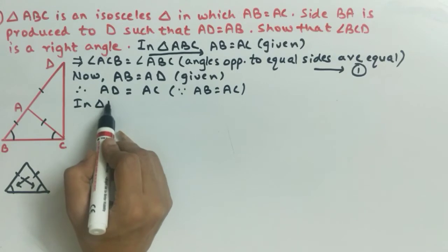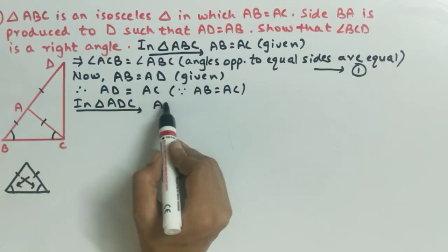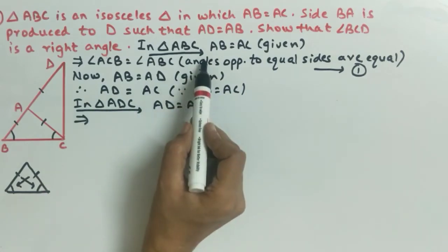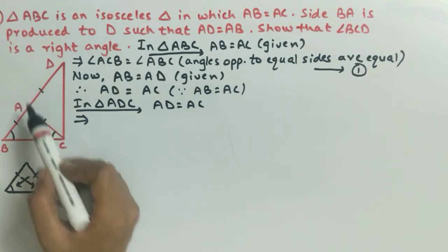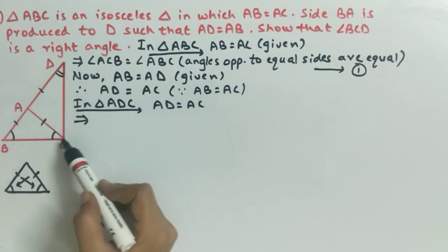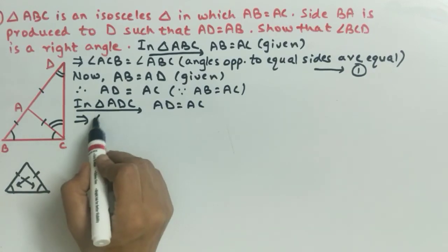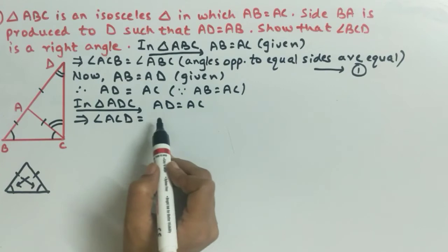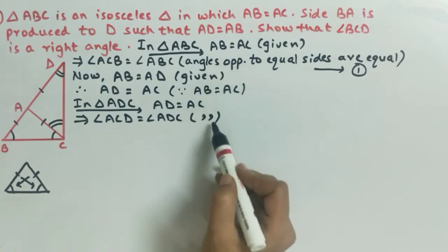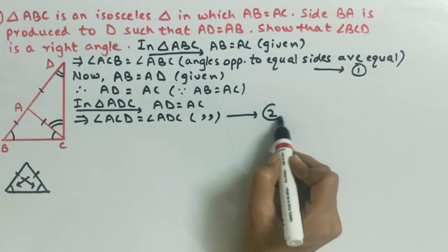अब हम लेंगे triangle ADC। इसमें हम अभी प्रूफ कर चुके हैं that AD is equal to AC। यहाँ पर भी हम same वही property apply करेंगे जो हमने ABC triangle में करी थी। यह दो sides equal हैं, तो इन sides के सामने के angles भी equal होंगे — angle ACD is equal to angle ADC। Property: angles opposite to equal sides are equal। इस equation को हम equation number 2 mark करेंगे।